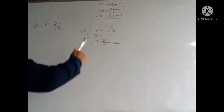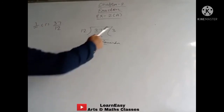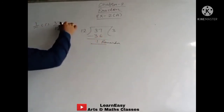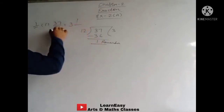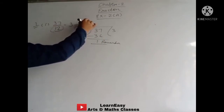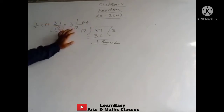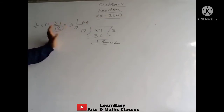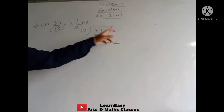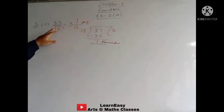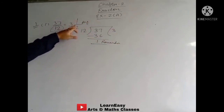So when dividing 37 by 12, the quotient is 3. We write 3 in the whole number place. The remainder 1 goes in the numerator, and we keep the denominator the same as given in the question, which is 12. So the answer is 3 whole 1 upon 12. To convert an improper fraction to a mixed fraction: divide, write the quotient as the whole, remainder on top, and the divisor as the denominator.